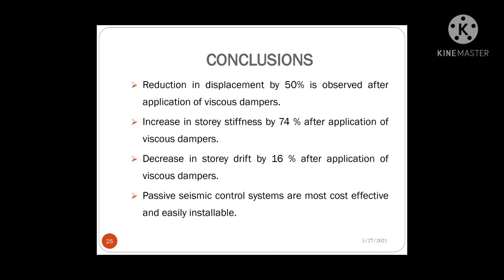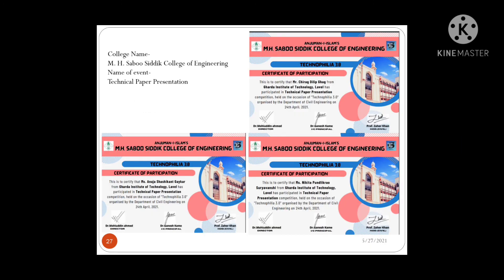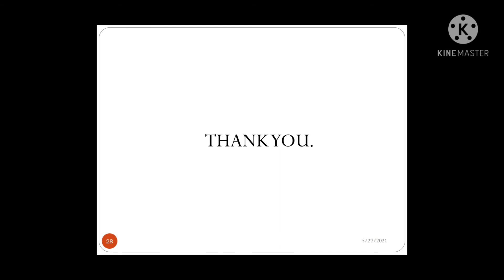To conclude, we have used viscous dampers in our 12-storey building in seismic zone 4 and soil type 2, which is medium stiff soil. By comparing the results, we can say that displacement has reduced by 50%, storey drift has decreased by 16%, and stiffness has increased by 74%. By comparing available papers, we have concluded that passive seismic control systems are most effective and easily installable. These are the references. We have also presented our project at Sabo Siddi College of Engineering in a technical paper presentation event. Thank you.